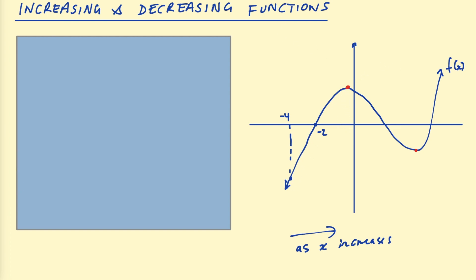All the way up to this point, we can say the function is increasing for that section. And in between those two turning points, we can say that the function is decreasing, because as x increases, the value of f(x) is decreasing. So let's say we look at this point where x is a half, and then at x equals 2 — the value of f(x) at x equals 2 is less than up here.